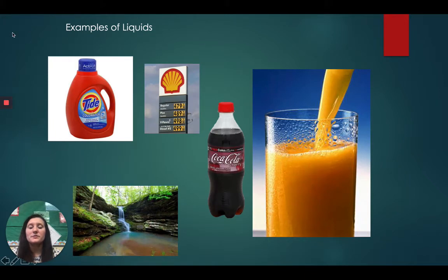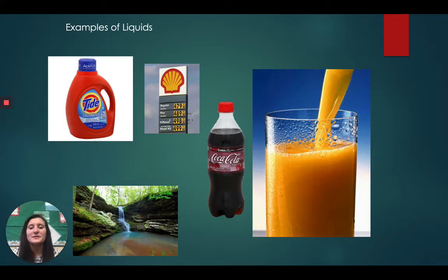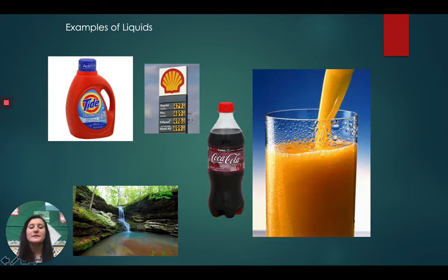Here are some examples of liquids we see in our life. Three of them actually have more than one type of matter. For example, the laundry detergent — the container is a solid, but the detergent inside is a liquid. The same goes for the soda bottle — the outside is a solid, but the soda inside is a liquid. And the glass of orange juice — the glass is a solid, but the liquid orange juice inside is what we drink.